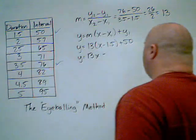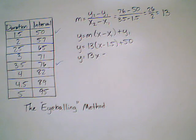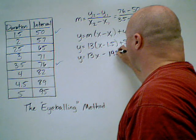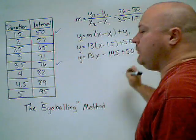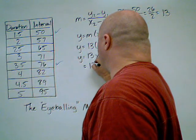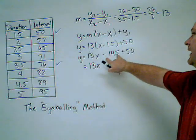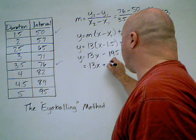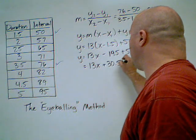13x. And 13 times 1.5 is actually going to give me 19.5. Now don't be afraid of the decimals. You can use your calculator to help you figure them out. So let's simplify some more.